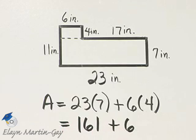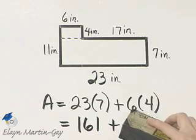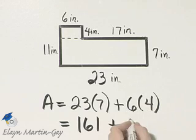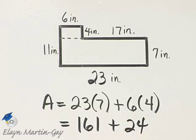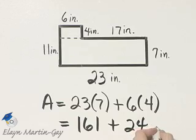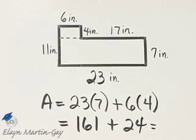Here, 24. And then if I add those two areas, 161 plus 24, that equals 185.